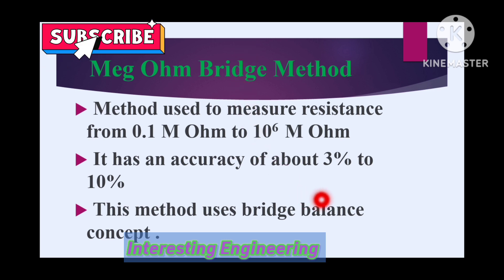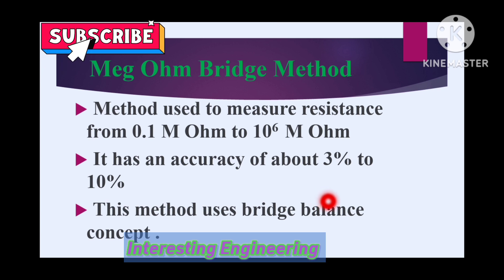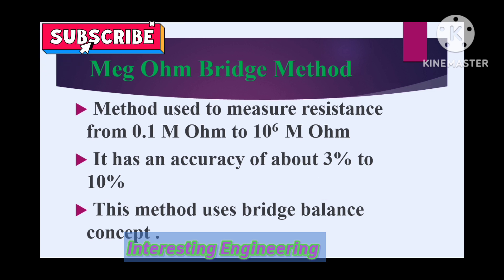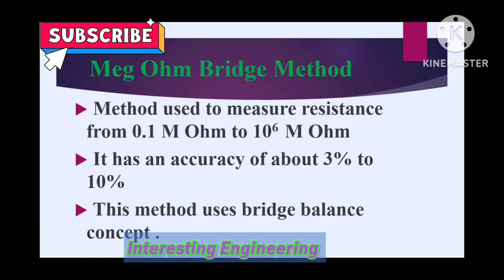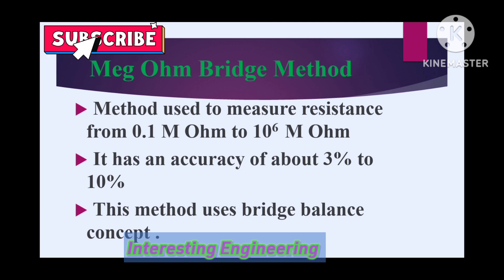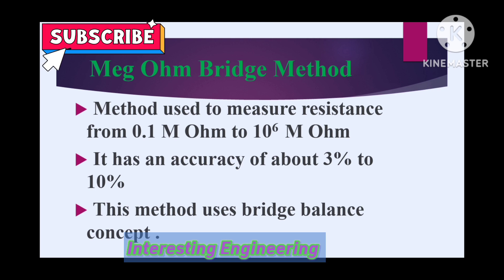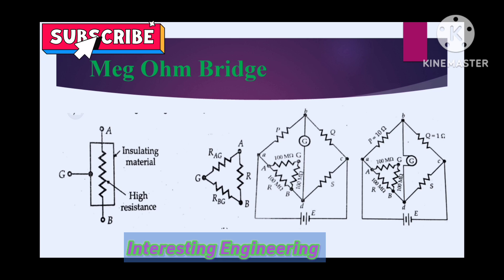Any bridge operates under the principle of bridge balance concept. A bridge consists of four resistive arms, of which two will be the fixed arm resistances, one is the variable arm resistance, and the fourth arm consists of the resistance whose value is to be measured. Any bridge circuit operates under the principle of null deflection — that is, the bridge balance concept.